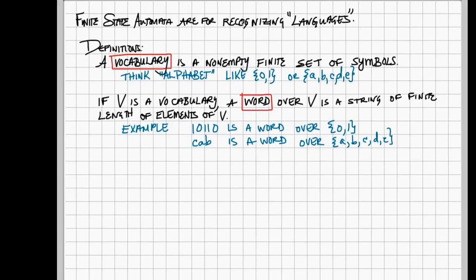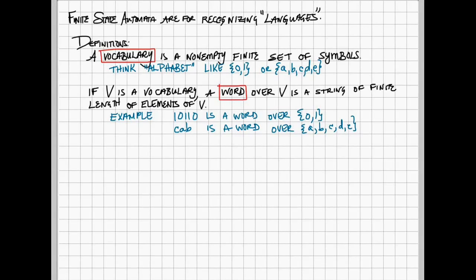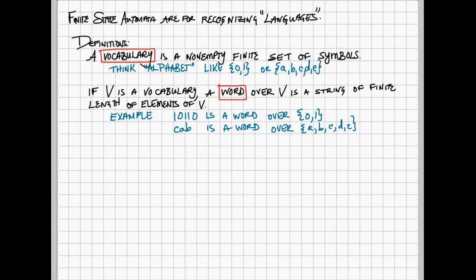And if V is your vocabulary, a word over V is just a finite string of these symbols. So we've done this before. You can take a binary word 10110. That's a word over the vocabulary {0,1}.